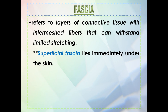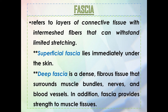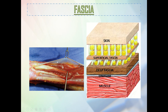Fascia refers to layers of connective tissue with intermeshed fibers that can withstand limited stretching. There are two types: superficial fascia, which lies immediately under the skin, and deep fascia, which is dense fibrous tissue that surrounds the muscle bundles, nerves, and blood vessels. Fascia provides strength to muscle tissue. You can see the layers from skin, to superficial fascia, to deep fascia, to epimysium, and then muscle.